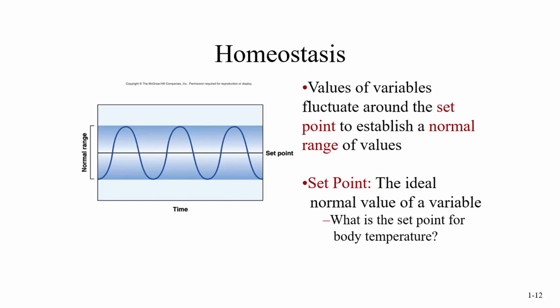Continuing on for part one, we're going to take a look at homeostasis. With homeostasis, we have values of variables which fluctuate around the set point to establish a normal range of values. Examples would be blood pressure, body temperature, blood sugar level, or liver enzyme level — any of those things.